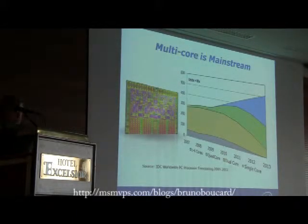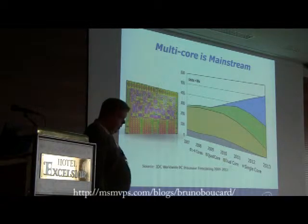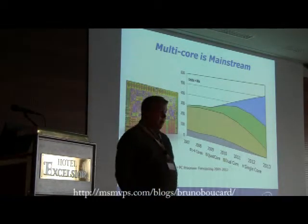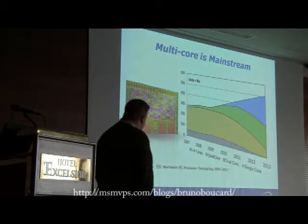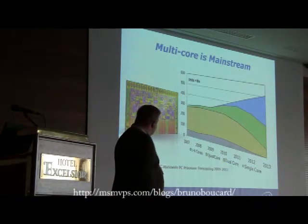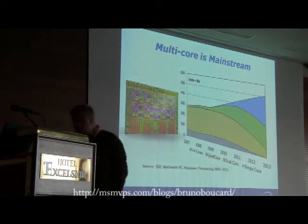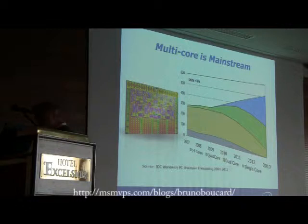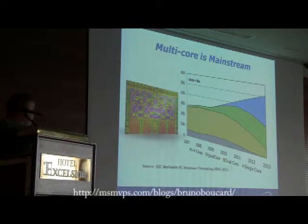As you guys probably know, Intel has been talking a lot about multi-core. The number of systems in the industry shipping that have multiple cores is growing. The gray there is single core, the yellow is dual, green is quad, and blue is more than four cores. As you can see, quad cores are picking up significantly and greater than four cores are growing as well, whereas the number of single cores is significantly shrinking.